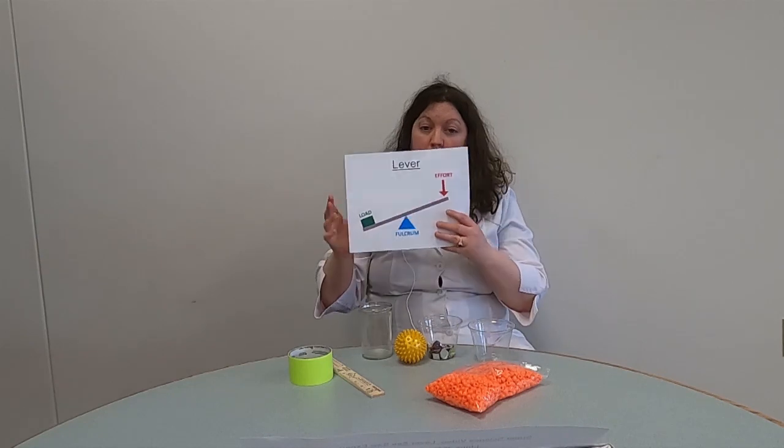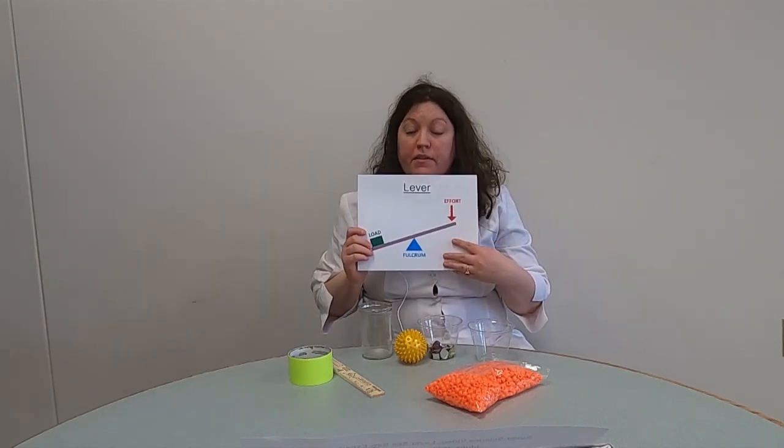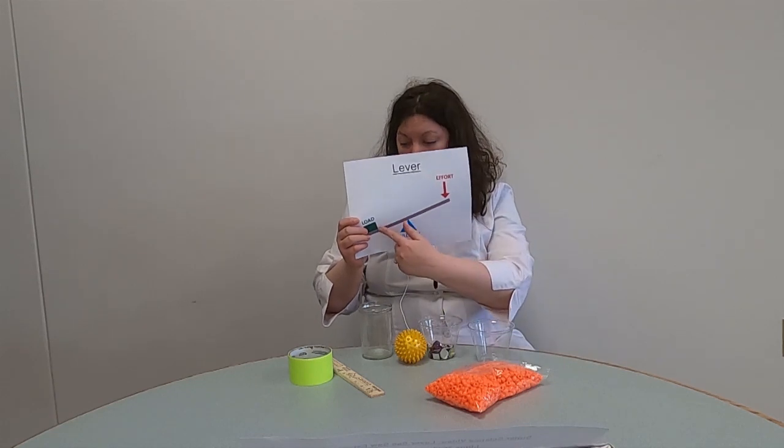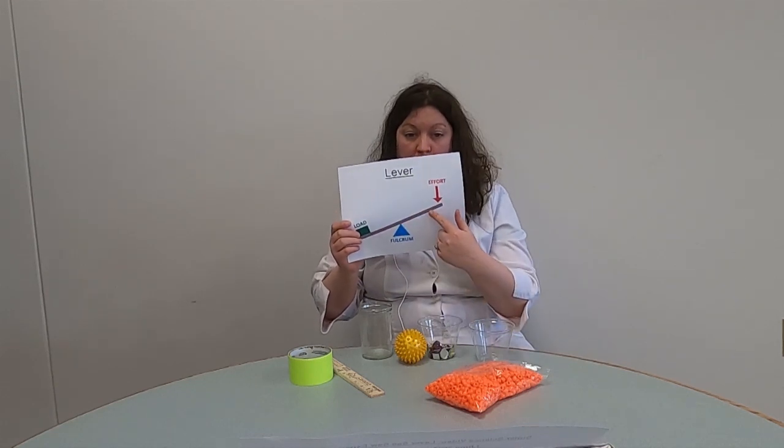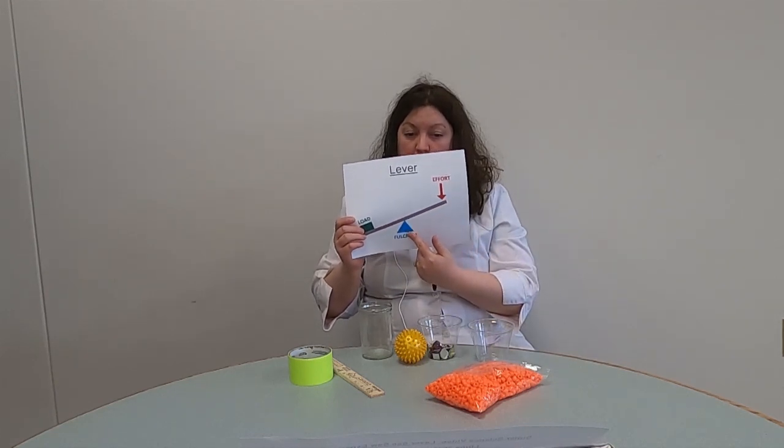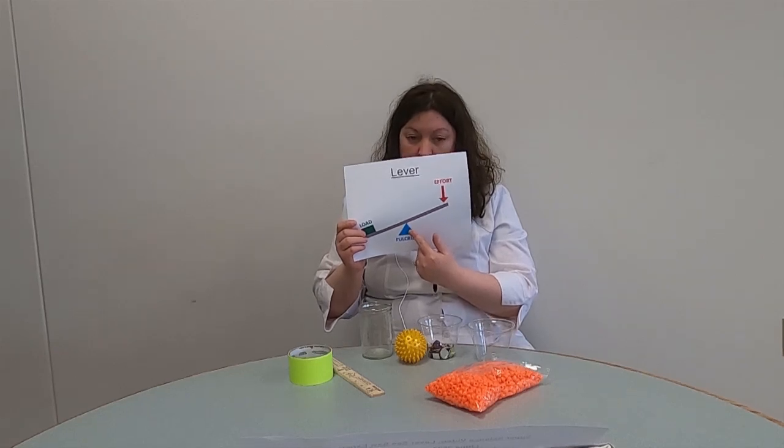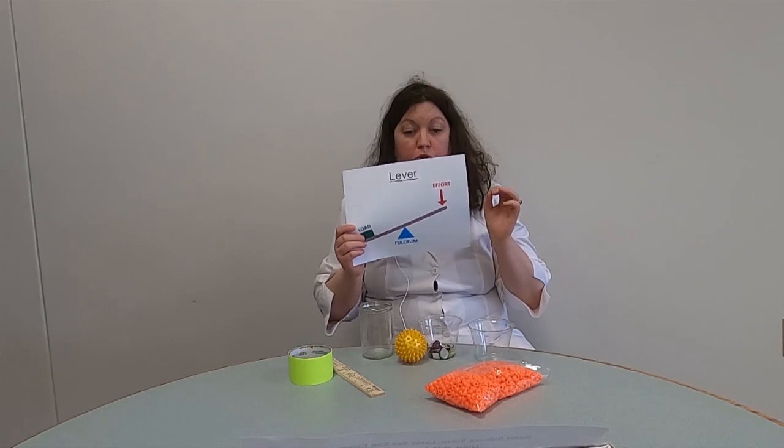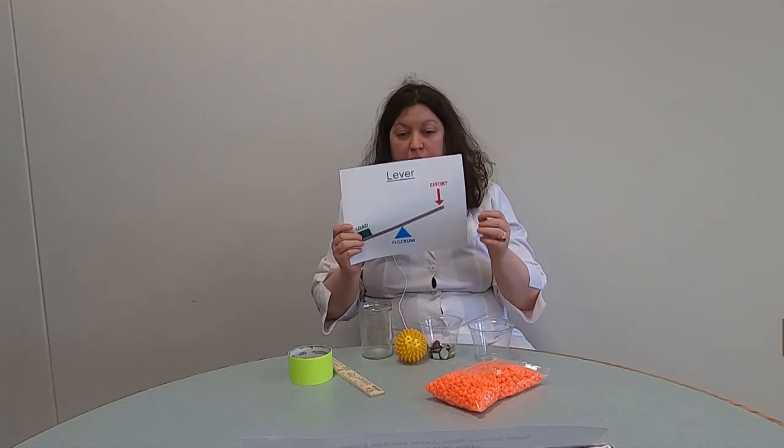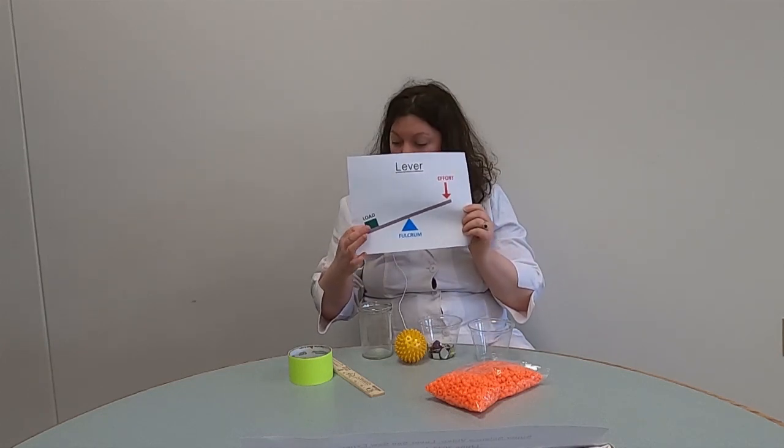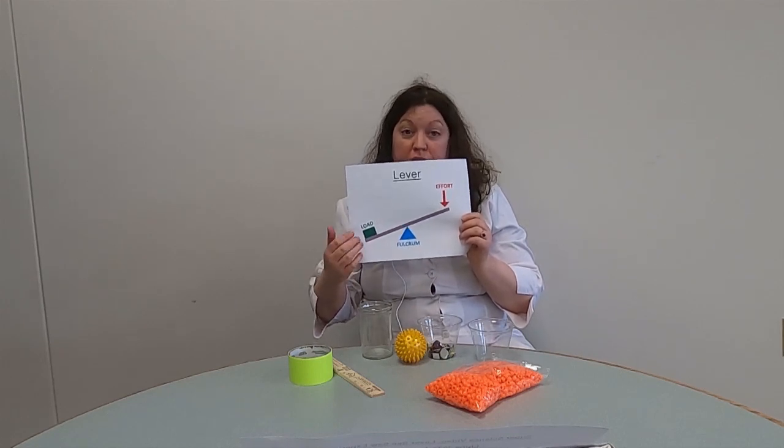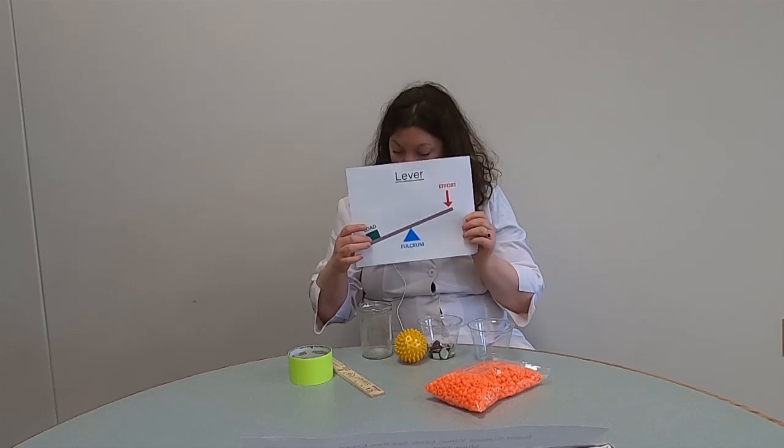The experiment we're going to be doing today is about the simple machine, the lever. Levers are simple machines and they only have two parts that work: the arm, which is this long rigid part right here, and the fulcrum, which is an object where the arm can rest or rotate. A person pushes or pulls the arm and it moves the object or the load on the lever. The farther the force of the person's movement, the easier it is to lift this load.